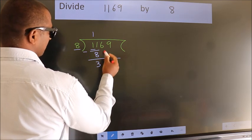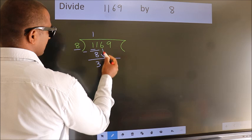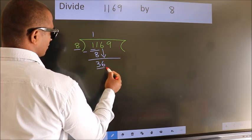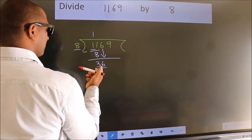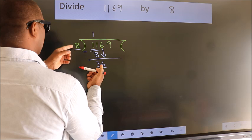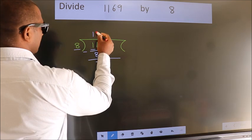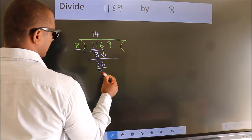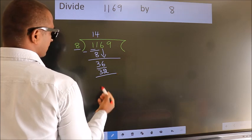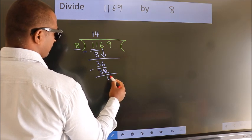After this, bring down the next number. 6 comes down, so 36. A number close to 36 in the 8 table is 8 fours 32. Now we subtract and get 4.